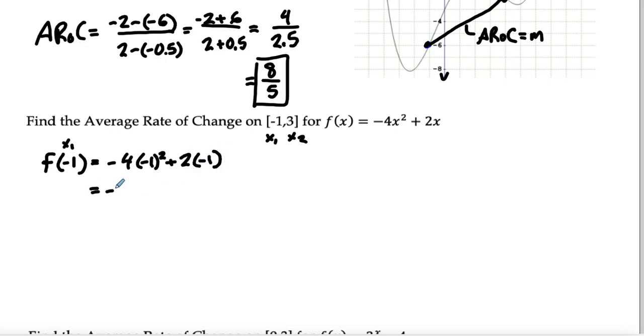We're going to get negative 4, because the negative 1 squared will turn back positive, and then minus 2, so we get negative 6. And remember, that's my y1.